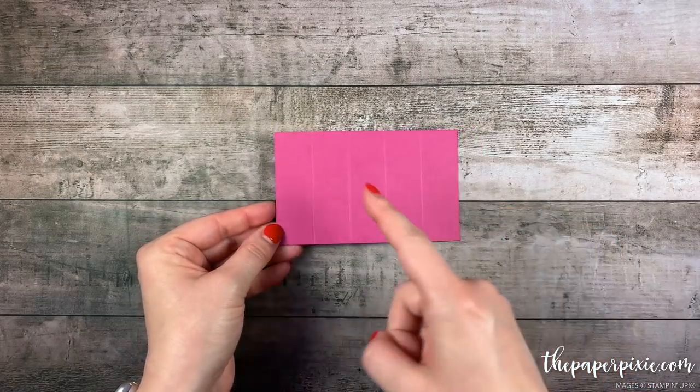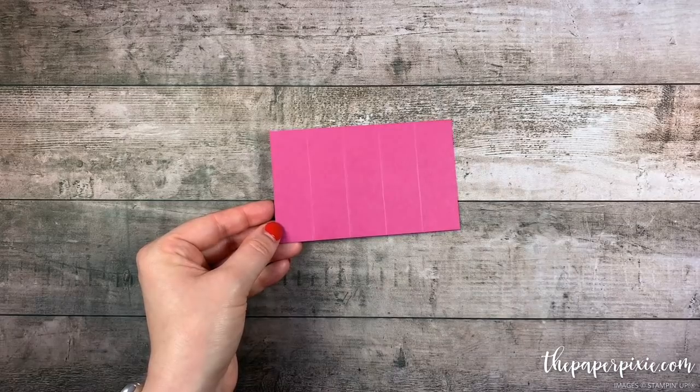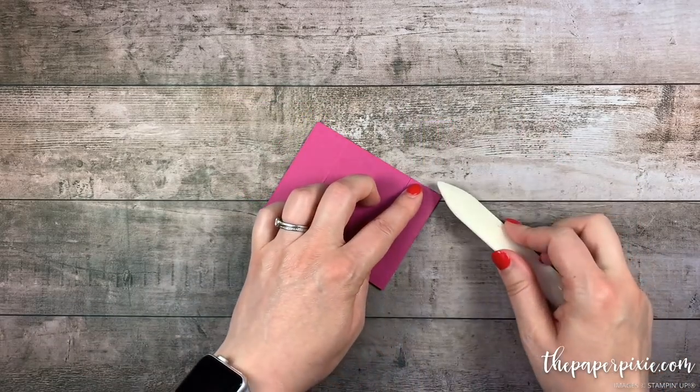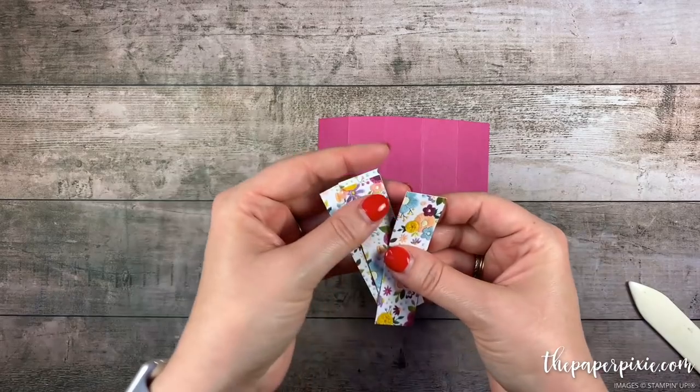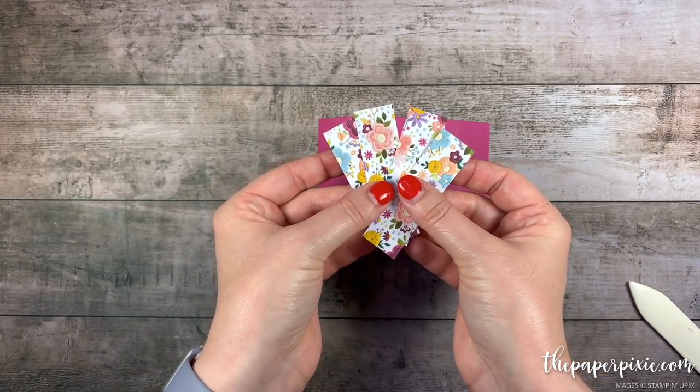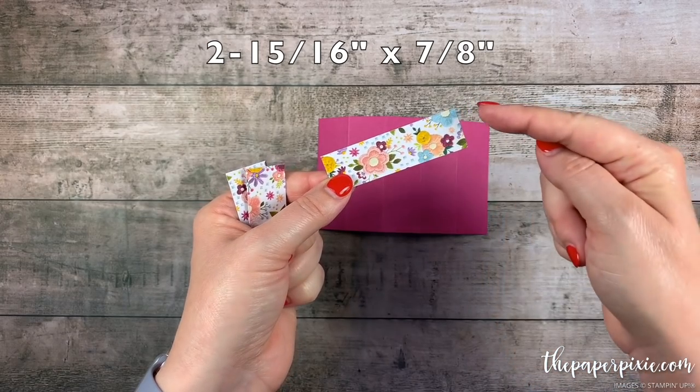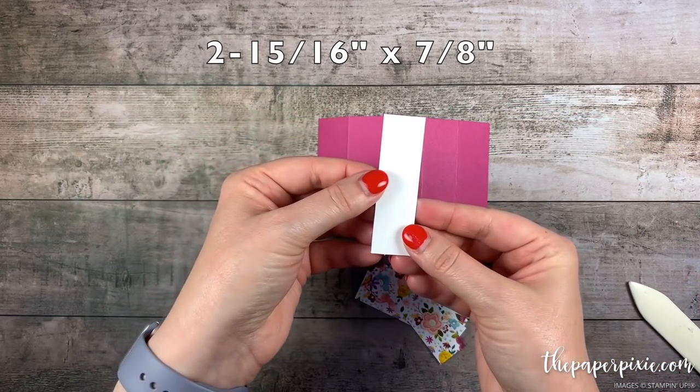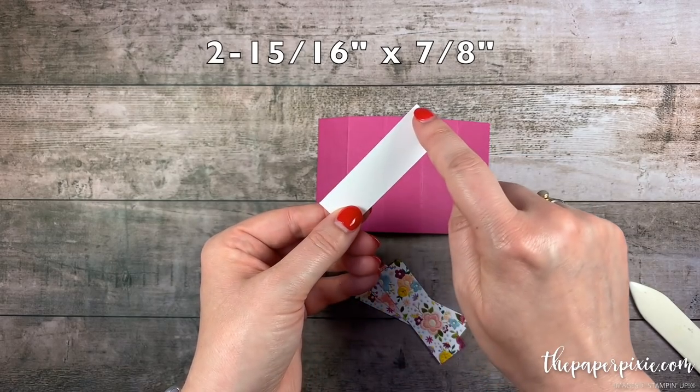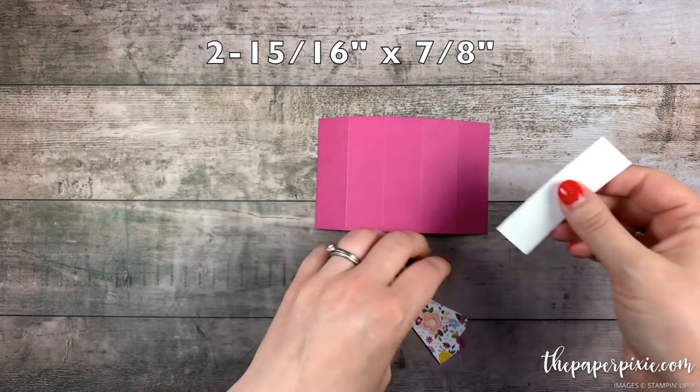Okay starting with this piece that we just scored at every one inch I'm gonna first fold and burnish on all the score lines and I've got four pieces of the needlepoint nook designer series paper that measure two and fifteen sixteenths by seven-eighths and I have a piece of whisper white with the same size two and fifteen sixteenths by seven-eighths.